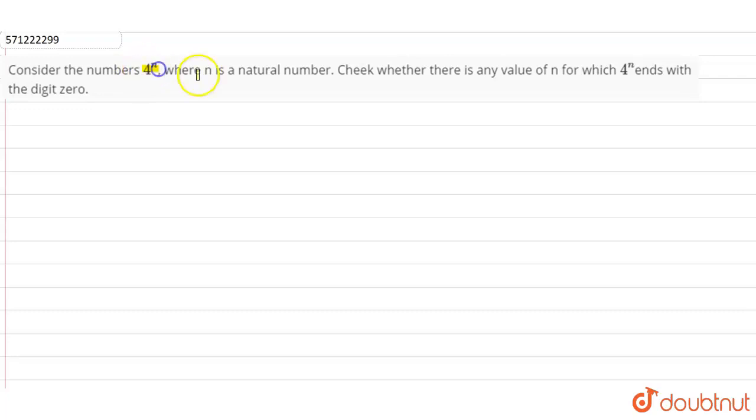the number 4^n where n is a natural number. Check whether there is any value for n for which 4^n ends with the digit 0. So to solve this question, 4^n ends with the digit 0 or not, so to